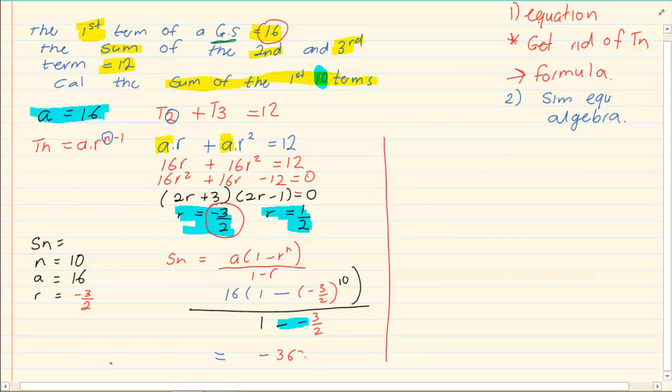Now remember you have to do it twice. You've done r is minus three over two, but you have to do r is equal to a half. So you have to also do this one.